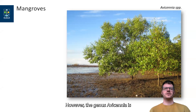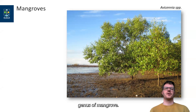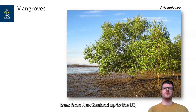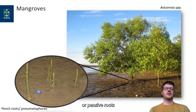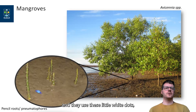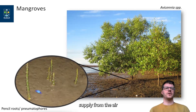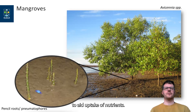However, the genus Avicennia is probably the most widespread genus of mangrove. You will find these trees from New Zealand up to the US, and they have a rather different type of root. These pneumatophores, or pencil roots, have the function of aerating the soil, and they use these little white dots — these lenticels — to increase the oxygen supply from the air to the underground, to aid uptake of nutrients.